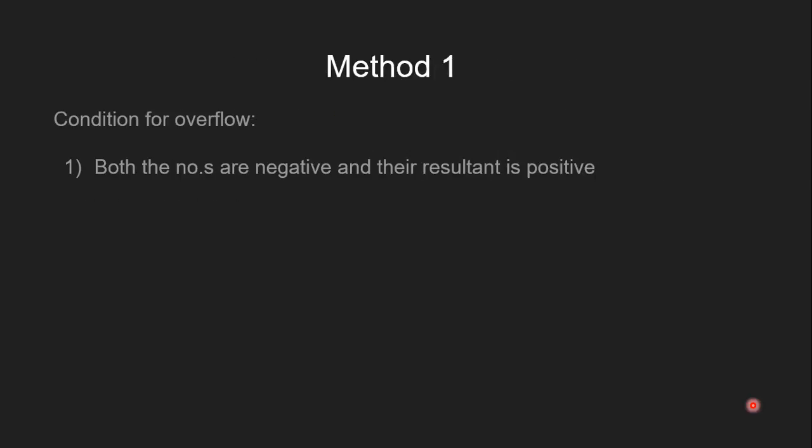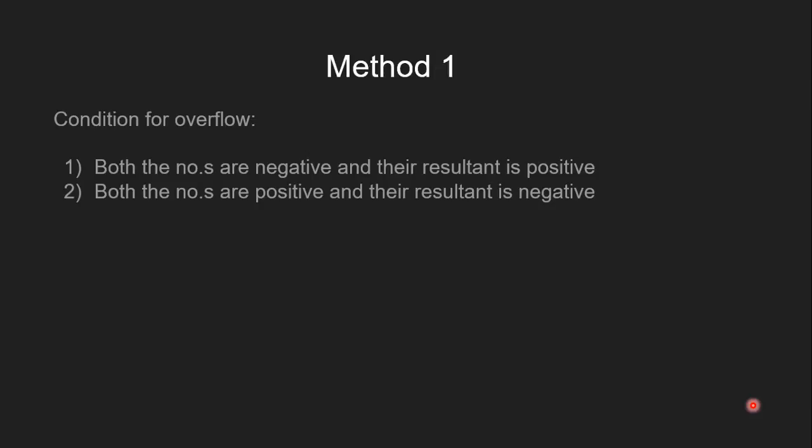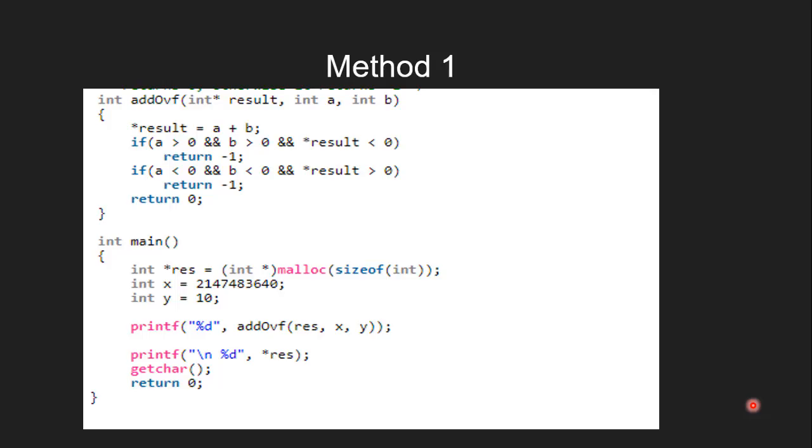The first method states that overflow can occur only if these conditions are met: first, both the numbers are negative and the resultant is positive, then there will be overflow; or if both the numbers are positive and the resultant is negative, then there will be overflow. Let's see the code for that.